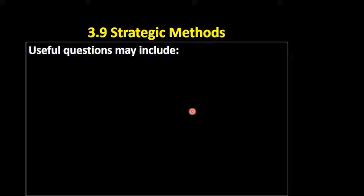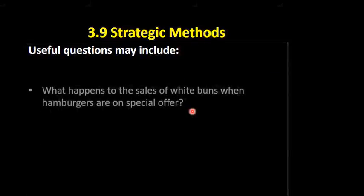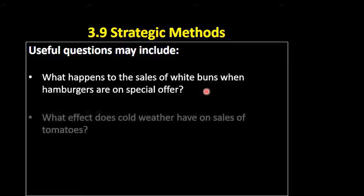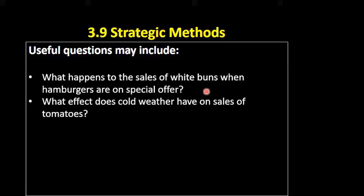So the sort of questions we might ask when data mining: what happens to the sales of white buns when hamburgers are on special offer? This would be very useful for a supermarket to ask. If we put hamburgers on offer, yes, we want to sell more hamburgers — but are white buns a complementary good? Do we sell more white buns when hamburgers are on offer? Because that's going to help us make the decision about whether to put hamburgers on offer in the future.